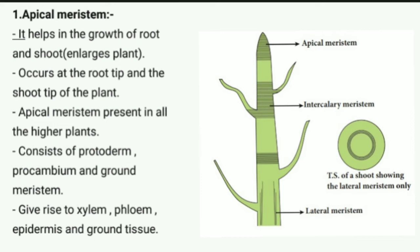Apical meristem consists of protoderm, prochambium, and ground meristem. Protoderm forms the epidermis; prochambium forms the vascular tissue system, that is, xylem and phloem; and ground meristem forms the ground tissue, which includes the cortex and pith.